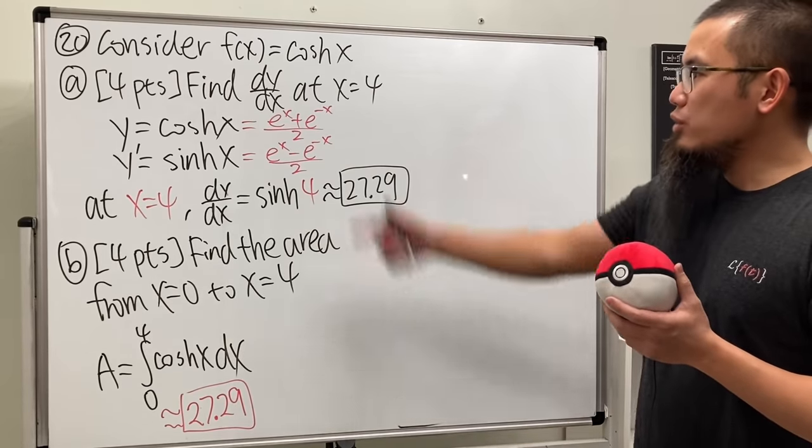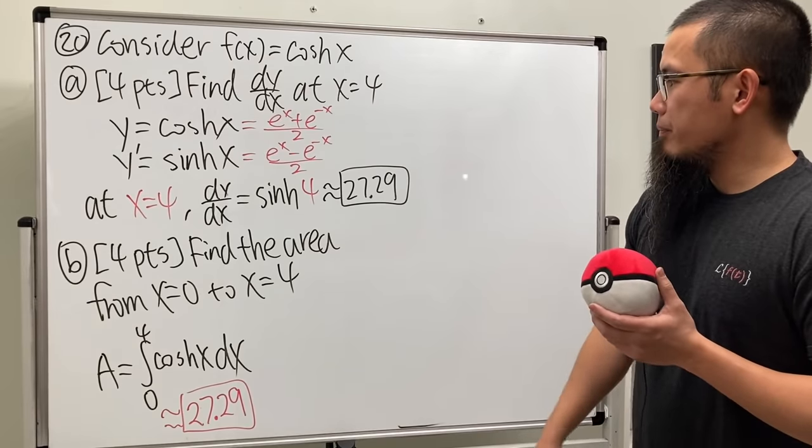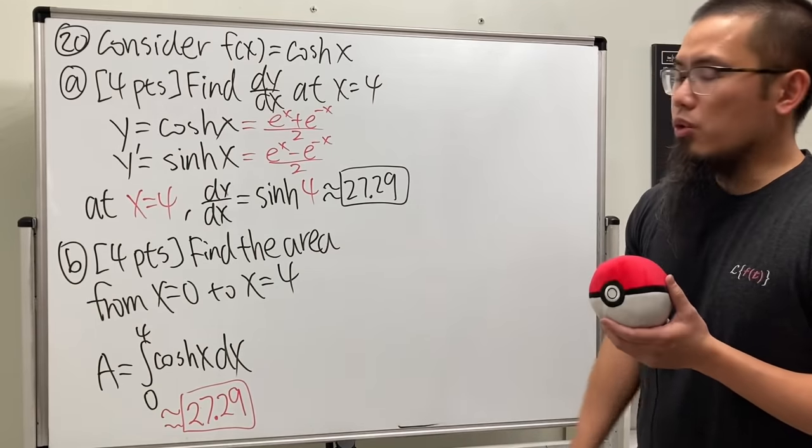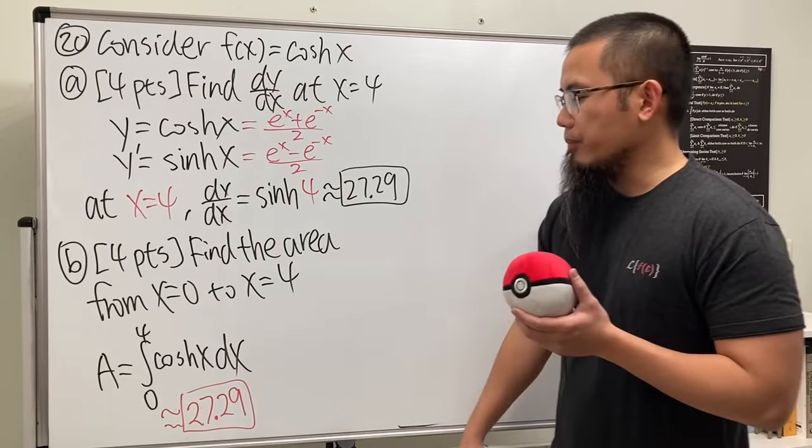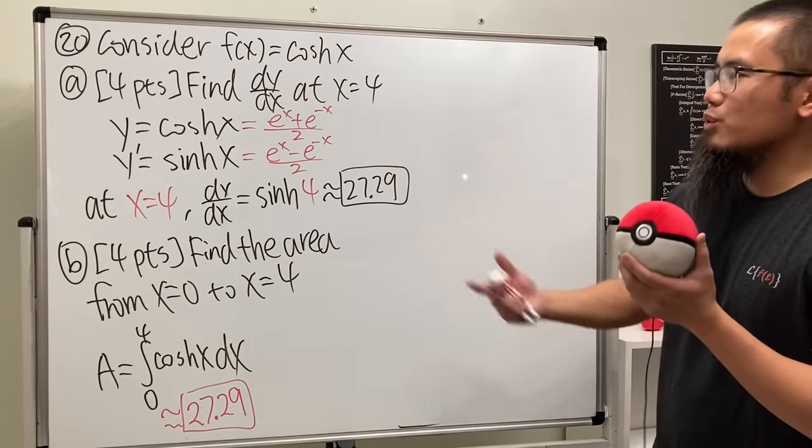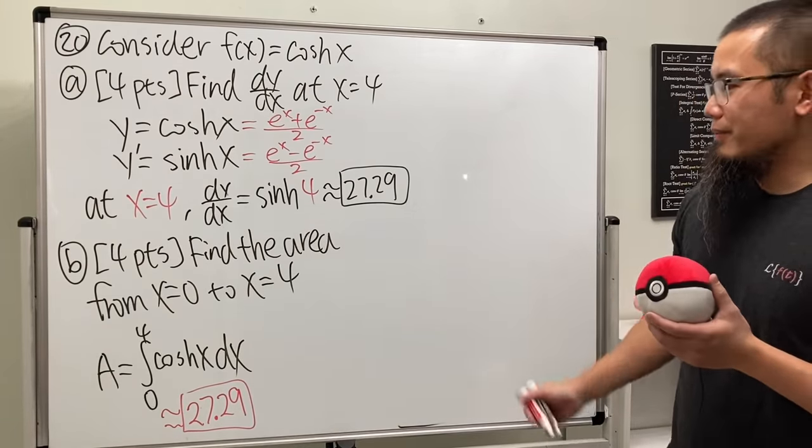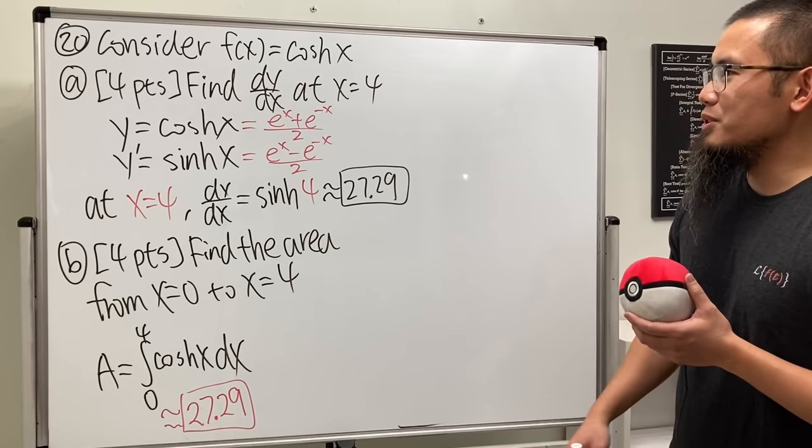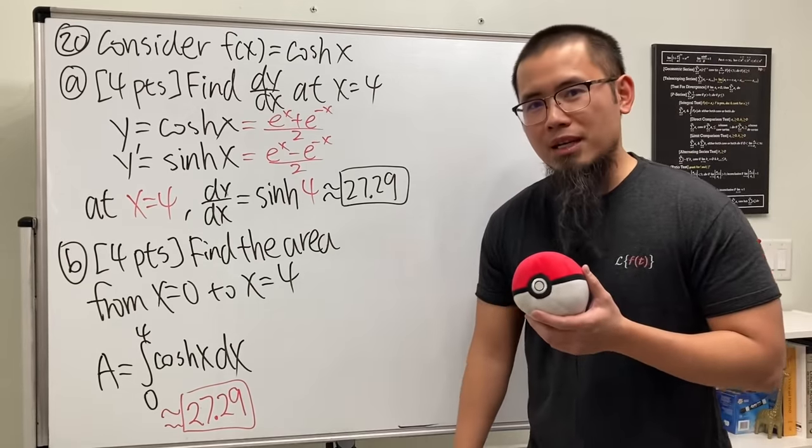Then they'll be like, oh that's kind of cool, because the area and the tangent line slope have the same value. That's pretty cool. I think this is super cool, and I just want them to do this to make them remember my class a little bit more.